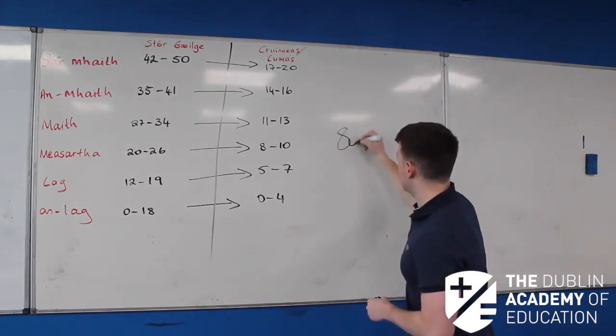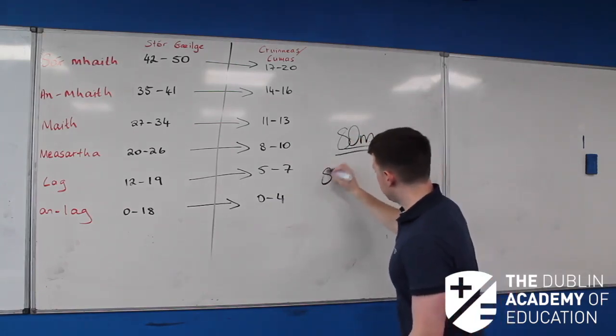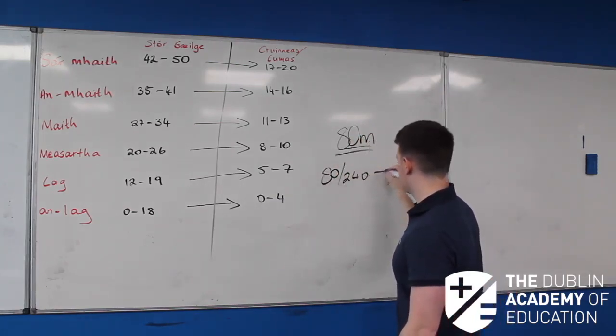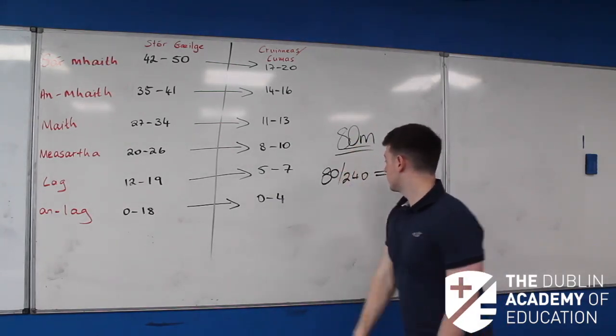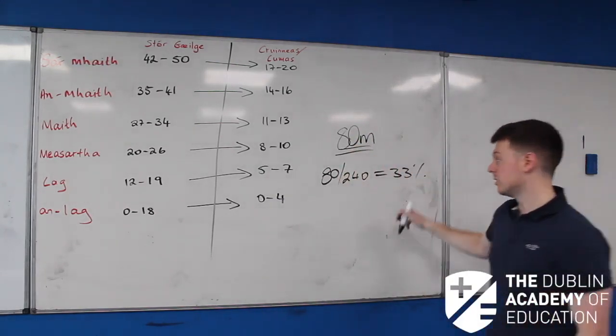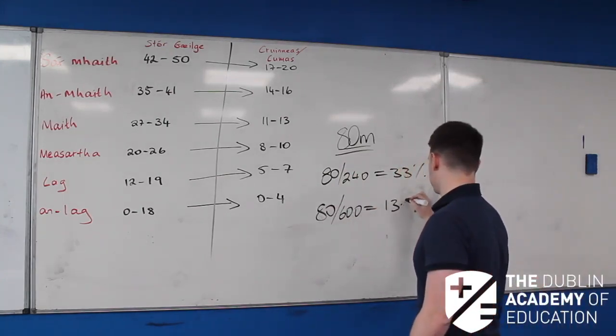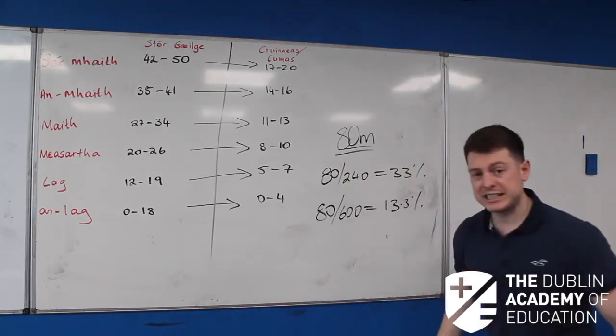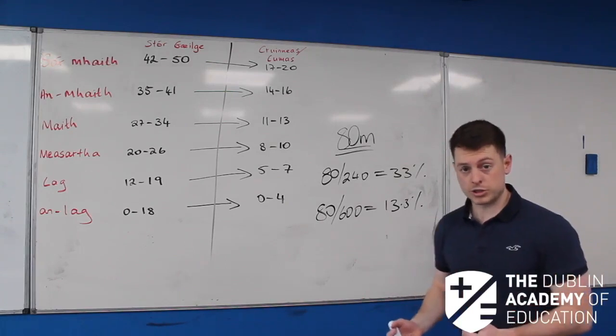80 marks. That is, I suppose, 80 out of 240. 33% of the oral, or 80 into 600, is 13.3% of your leaving. The whole result in Irish.